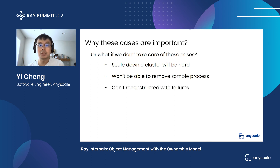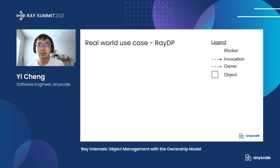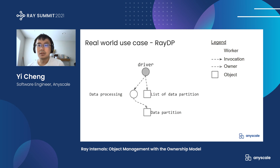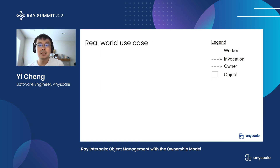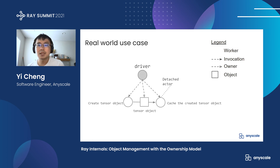And we won't be able to reconstruct objects if the owner died. Here is a real-world example in VDP: they pass a list of data partitions upward to the caller. If the worker dies, there is no way to get the data. Here is another example: the tensor object is put into the object store first, and then the list of object references is stored in a detached actor. If the worker exits, then these cached objects are no longer able to be retrieved.